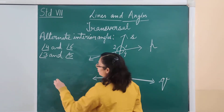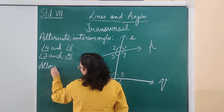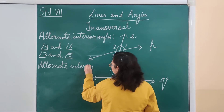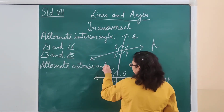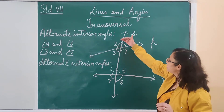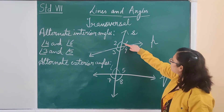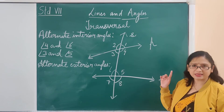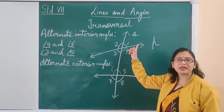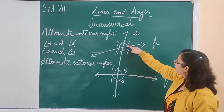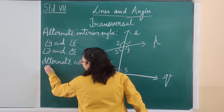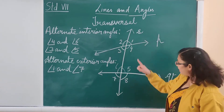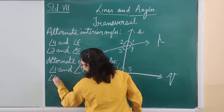The next type of angles are alternate exterior angles. The exterior angles are angle 1, angle 2, angle 7, and angle 8. Alternate exterior angles means exterior angles which are on the alternate sides of the transversal. So angle 1 and angle 7 are alternate exterior angles, and angle 2 and angle 8 are also alternate exterior angles.